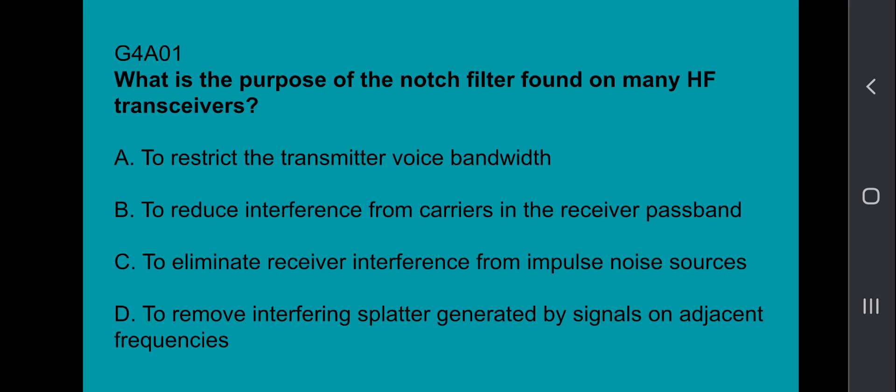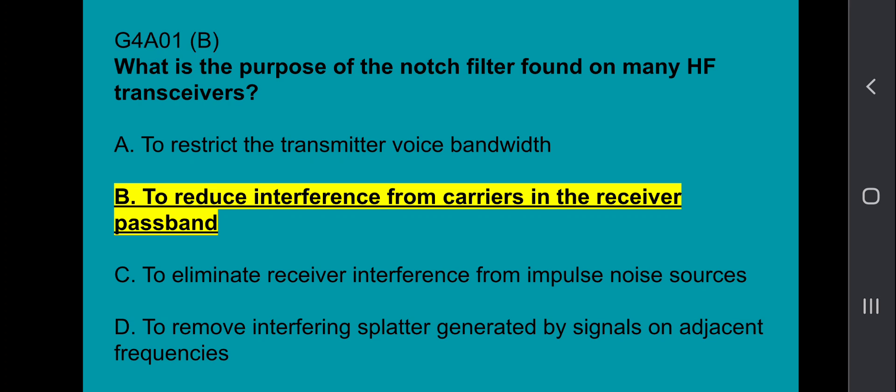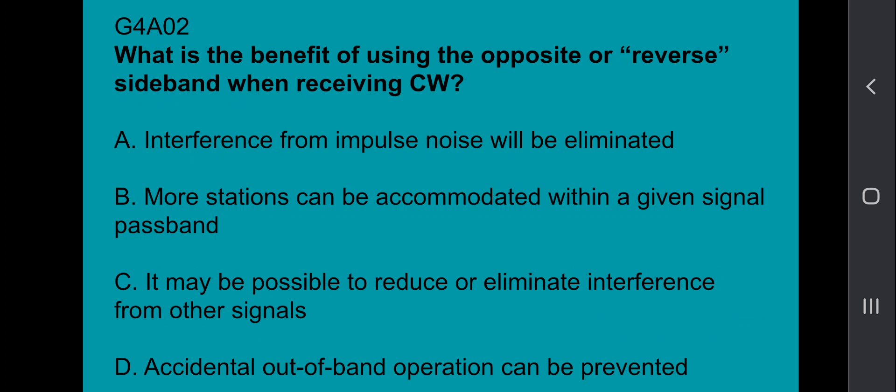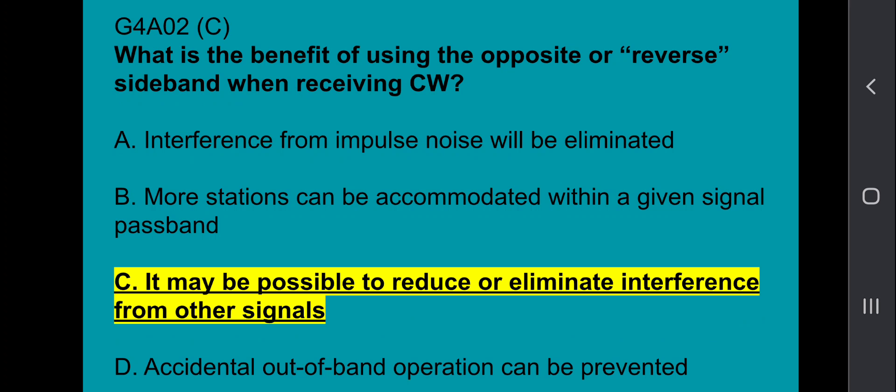G4A01 says, what is the purpose of the notch filter found on many HF transceivers? The answer is to reduce interference from carriers in the receiver passband. G4A02, what is the benefit of using the opposite or reverse sideband when receiving CW? The answer is it may be possible to reduce or eliminate interference from other signals.